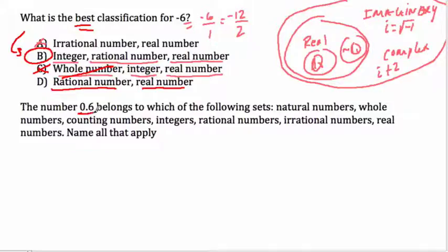Now, the next one is a similar question, but now it's saying the number 0.6 belongs to which of the following sets? All this stuff, the rationals and integers, all these types of numbers are called sets of numbers.